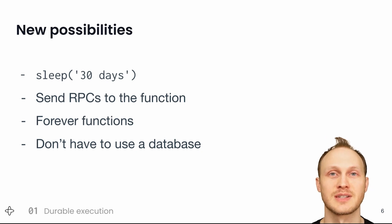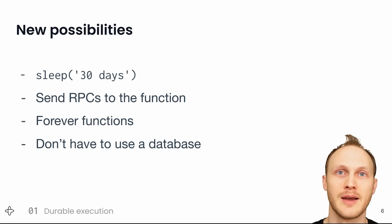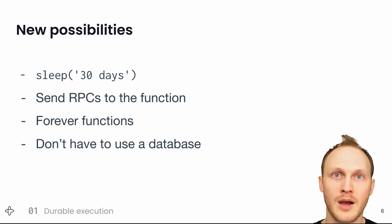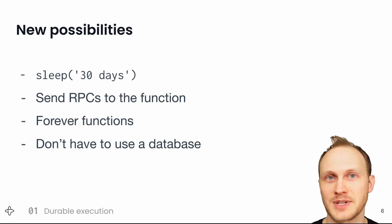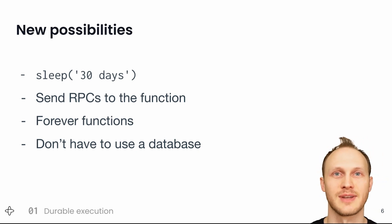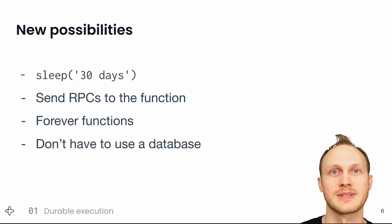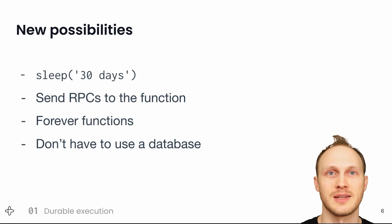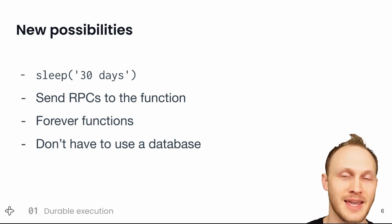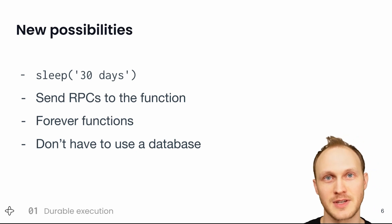Since these functions are potentially long running, you may want to query them for their state or send them instructions. So durable functions provide mechanisms to receive and respond to RPCs. For instance, on Amazon there's a 30 minute cancellation window on each order. If that was implemented with a durable function, you would start the function at order time, the function would reserve the item from the inventory service, sleep for 30 minutes, and if it received an RPC that said cancel before then, it would free up that inventory, send a cancellation successful email, and return.